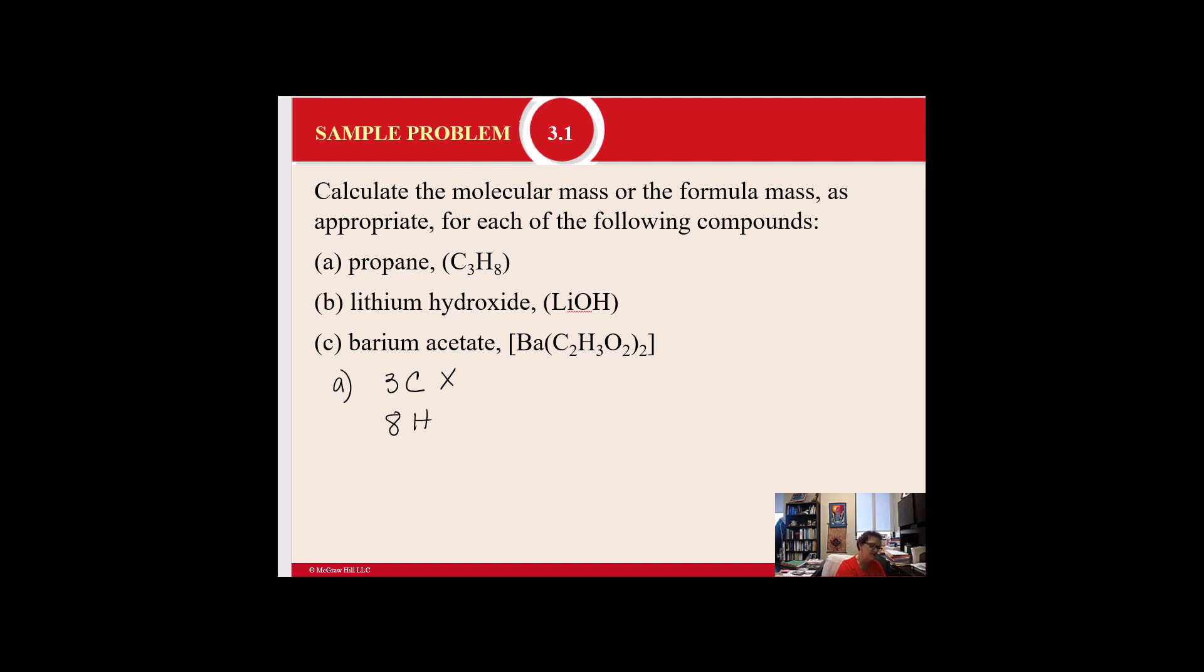So you've got three carbons. Carbon's atomic mass is 12, so that means that we have 36 AMUs that are due to carbon. Then we have eight hydrogens, which are approximately one, so that gives us eight AMUs due to the hydrogen. And then when we add those up, we get 44 AMUs.